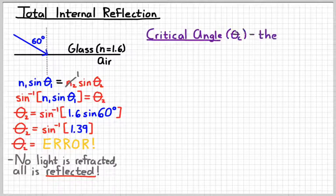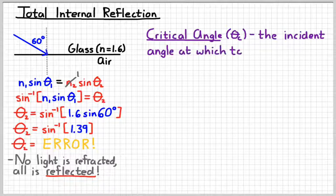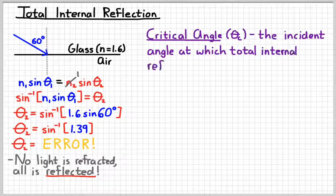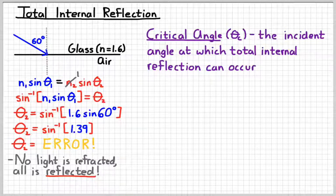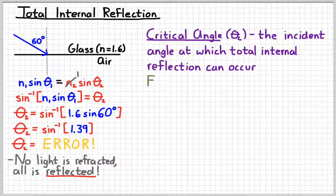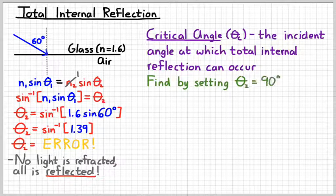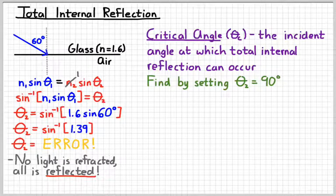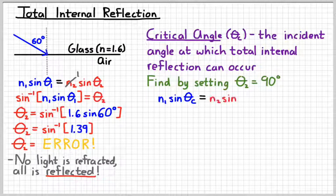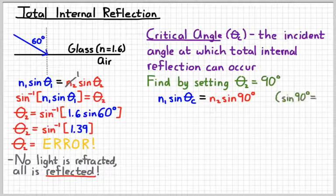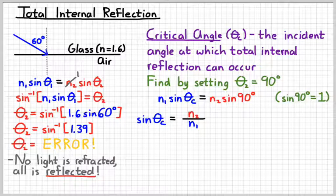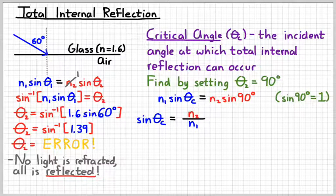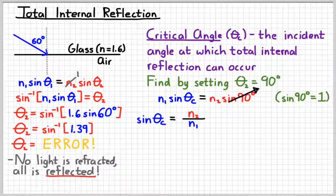So we define something called the critical angle, which I'm going to give the symbol theta subscript c. That's the incident angle at which all your light is going to be reflected. And so no light gets refracted. It's all reflected. The way that we find the critical angle is we set theta 2 equal to 90 degrees. And so if we apply that, remember that the sine of 90 degrees again is 1. Then I can write that the sine of the critical angle is equal to n2 over n1 because this will be 1.